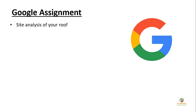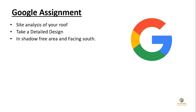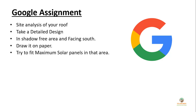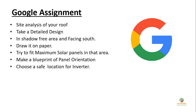Here is your assignment: do a site analysis of your own rooftop. Take the detailed design, mark out everything, and find the shadow-free area which faces south. Draw it on paper and try to fit maximum panels in this area. Make the blueprint of panel orientation, design a structure, choose a safe location for your inverter placement, and find some Android applications for site visit.